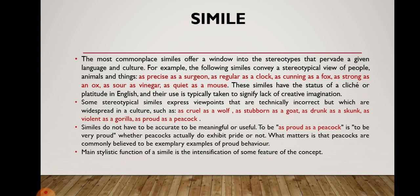The most commonplace similes offer a window into the stereotypes that pervade a given language and culture. For example, the following similes convey a stereotypical view of people, animals, and things: 'as precise as a surgeon,' 'as regular as a clock,' 'as cunning as a fox,' 'as strong as an ox,' 'as sour as vinegar,' 'as quiet as a mouse.' These similes have the status of a cliché or platitude in English, and their use typically signifies a lack of creative imagination. Some stereotypical similes express viewpoints that are technically incorrect but widespread in a culture, such as 'as cruel as a wolf,' 'as stubborn as a goat,' 'as drunk as a skunk,' 'as violent as a gorilla,' 'as proud as a peacock.'